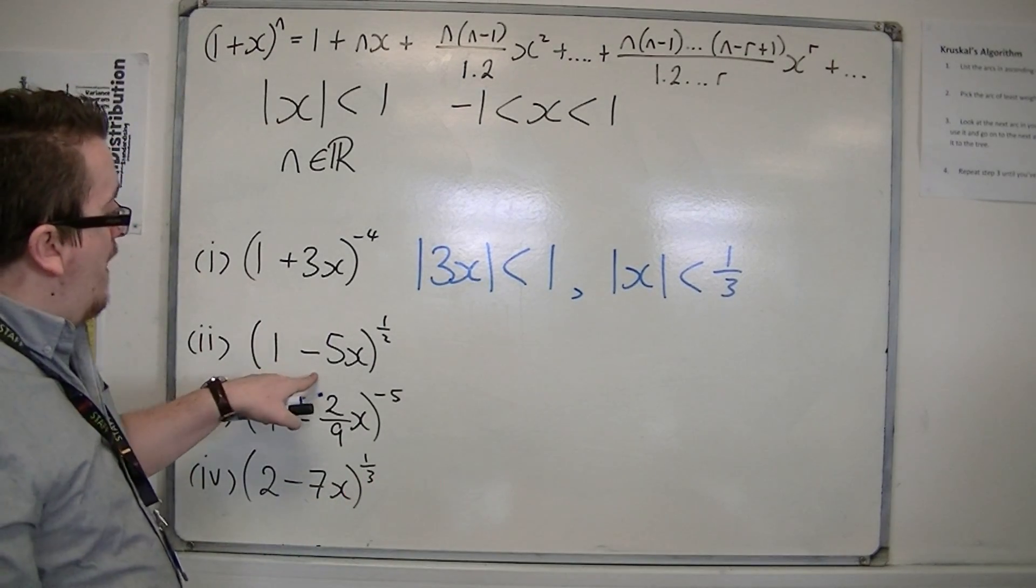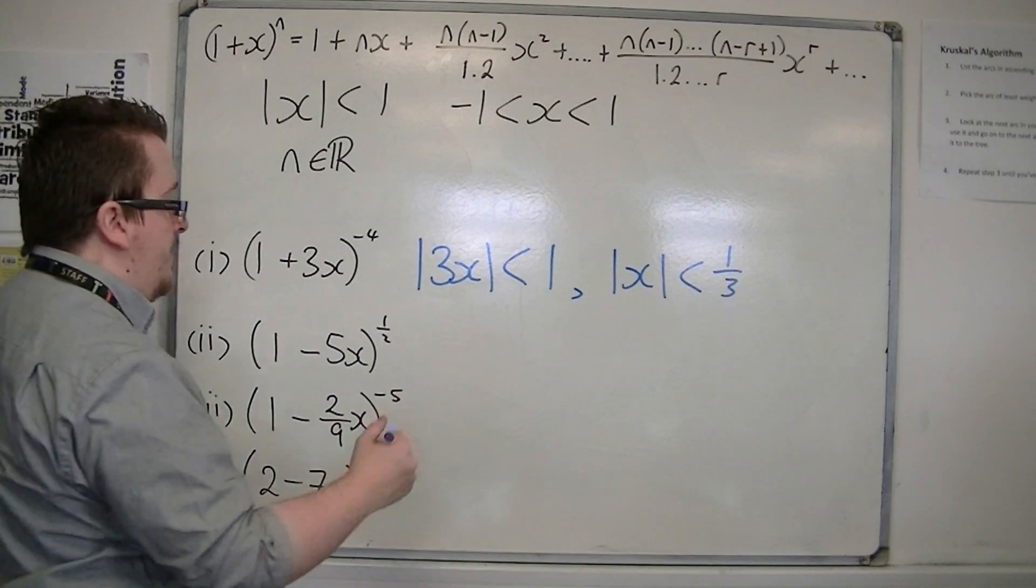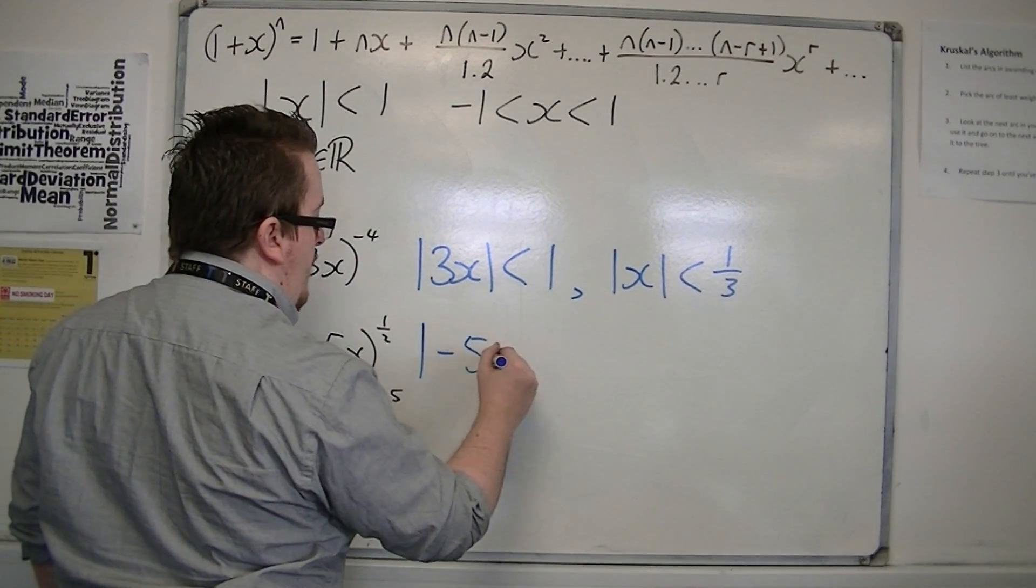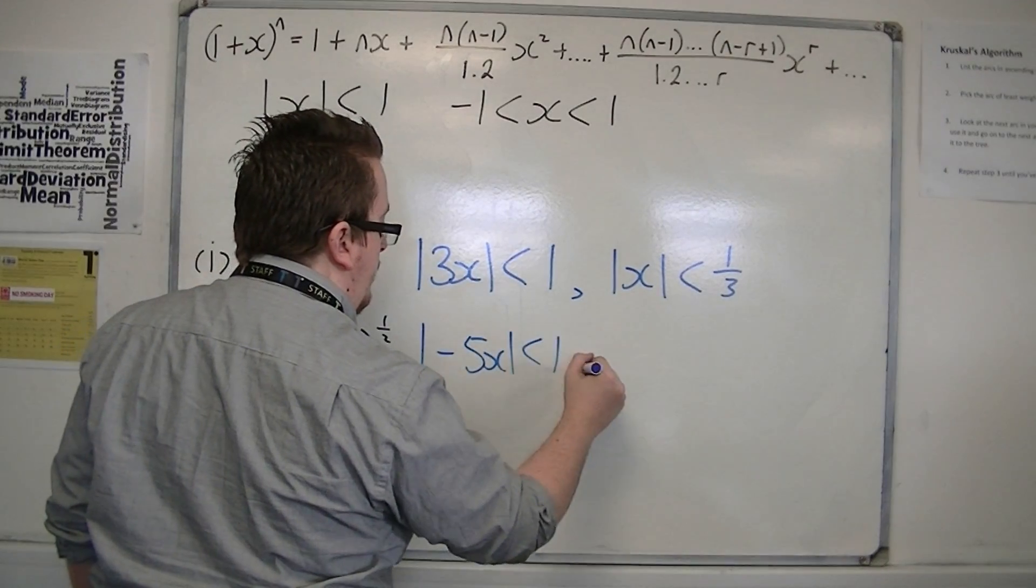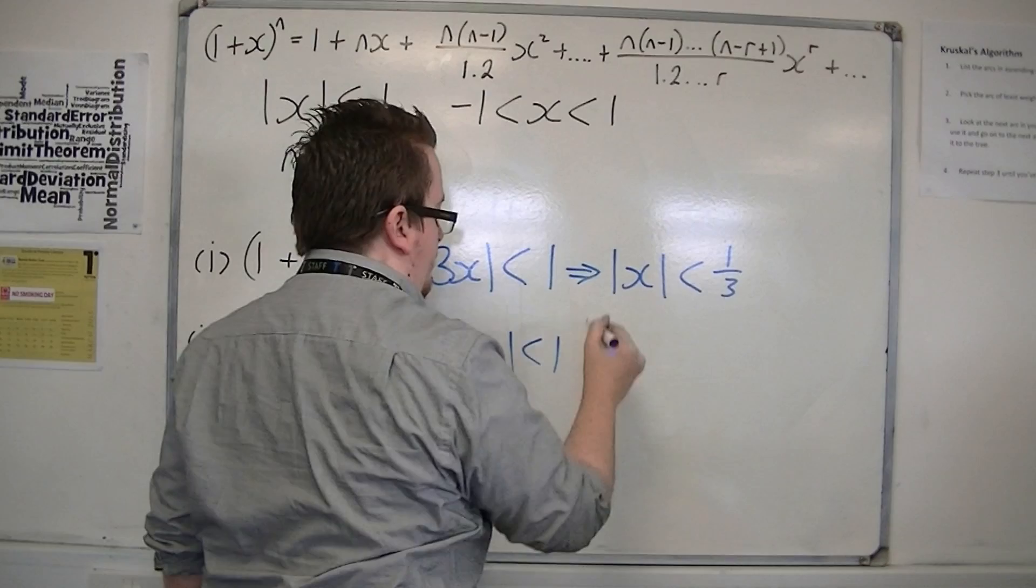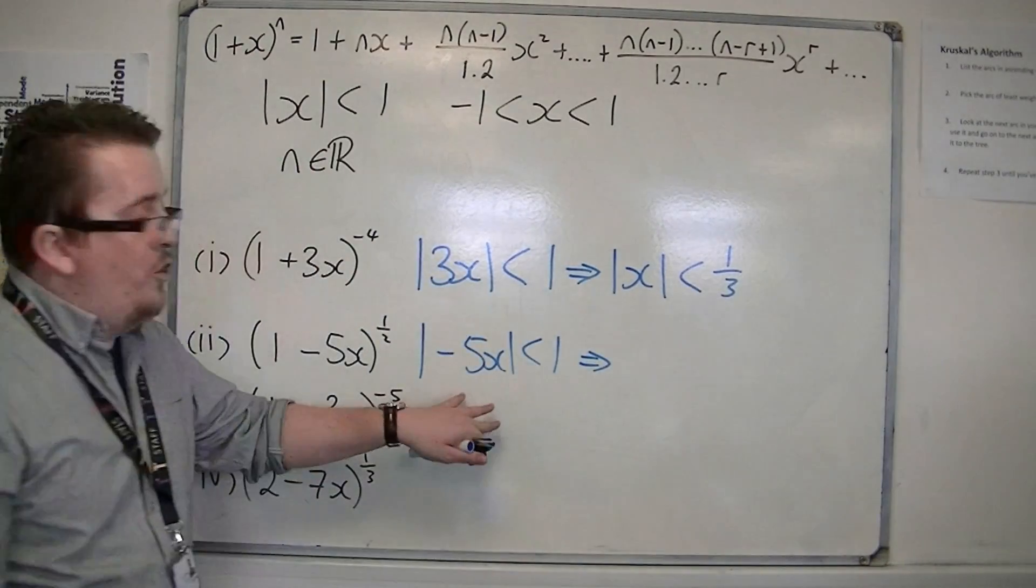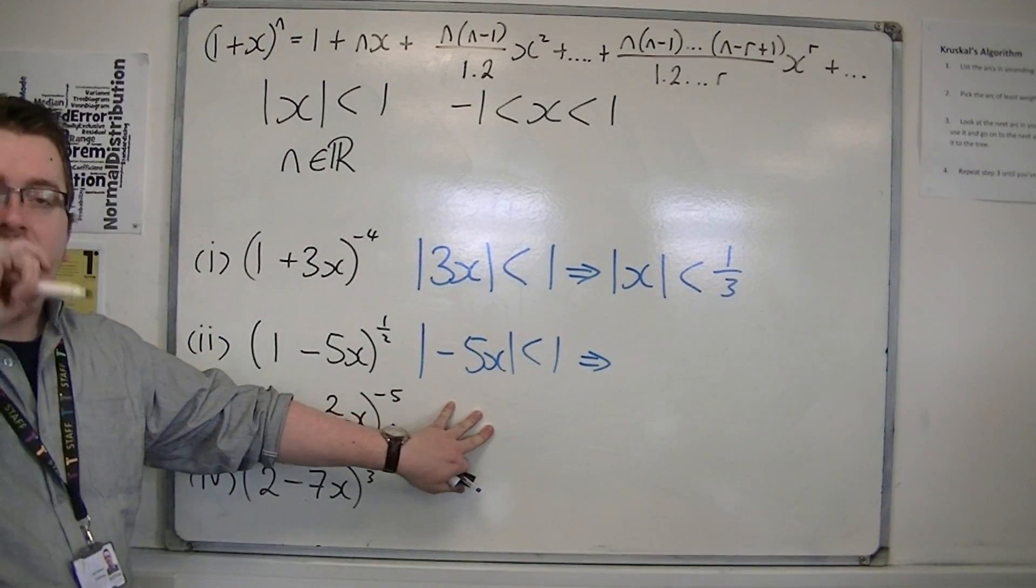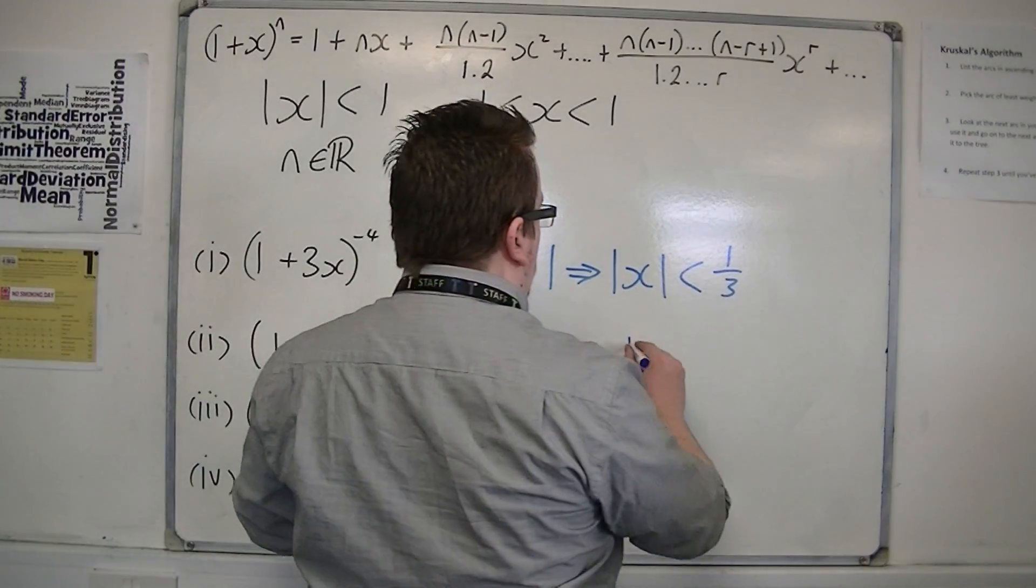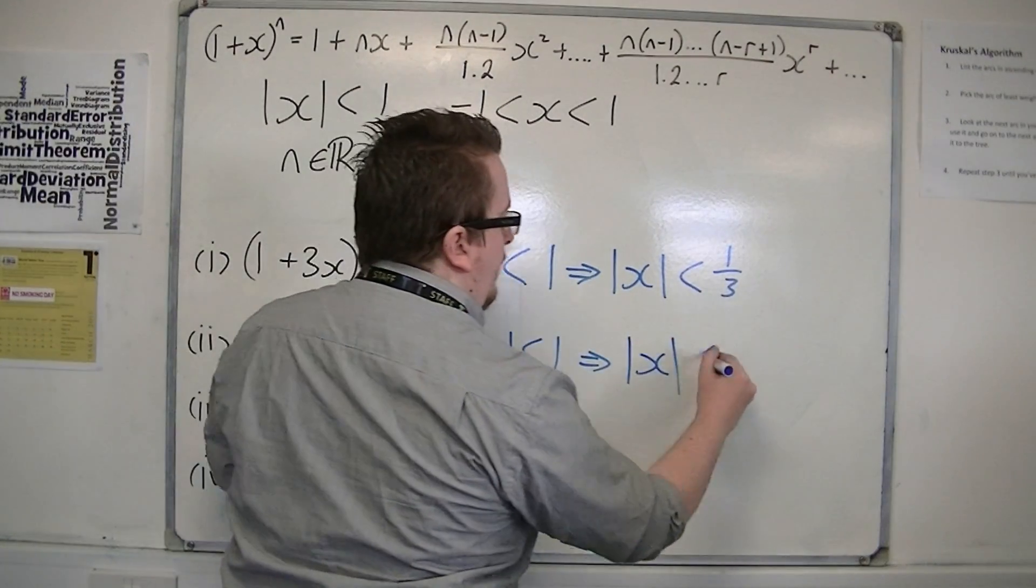If I have 1 minus 5x to the power of 1 half, then I can replace the x with minus 5x this time. But of course, the modular side will get rid of the negative, and I can divide both sides by 5. So, I can write that as mod x is less than 1 fifth.